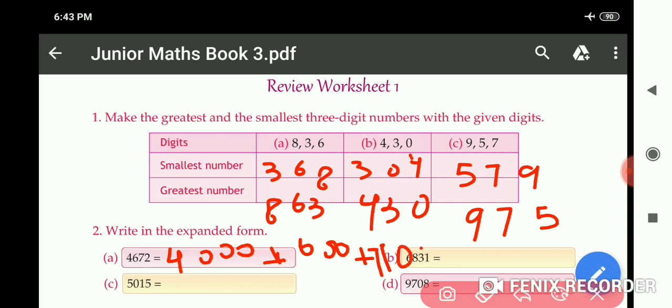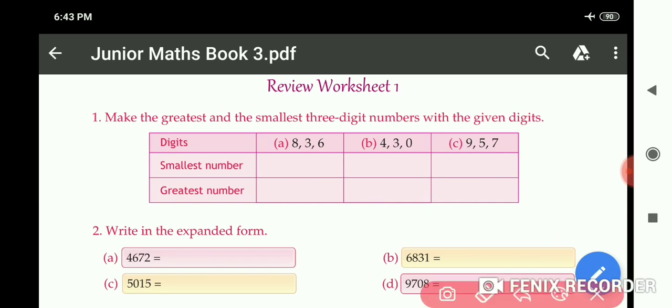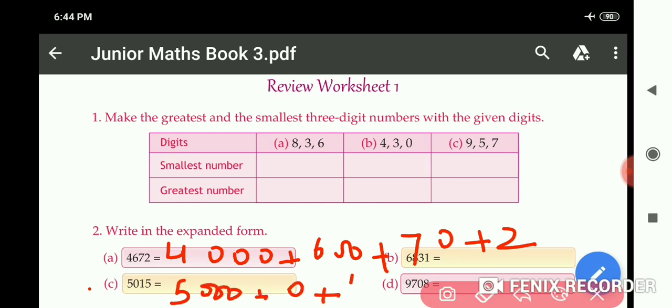1,000 plus 0 plus 10 plus 5. Part B and part D will also be done like this only. B and D you have to do yourself.